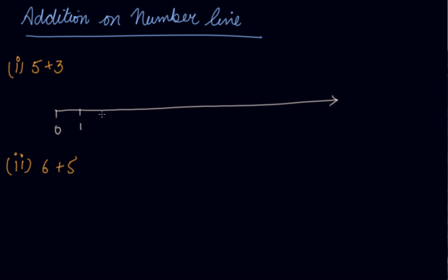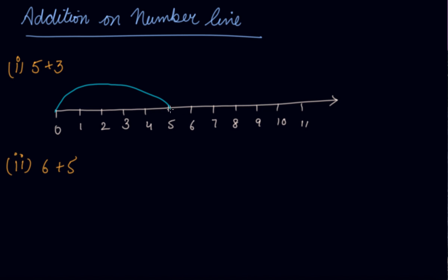We will start from 0. Keep the same distance between each point. Now, how will we do the addition? From 0, first take a big jump to 5 — since we have to add 5 and 3, take a big jump to 5. After that, add 3 more by taking small jumps: 1, 2, and 3. You will get the answer 8. We all know that 5 plus 3 is 8, and this is how we calculate it on the number line.